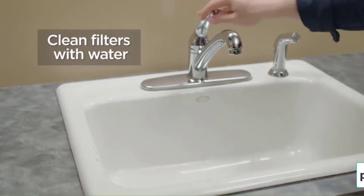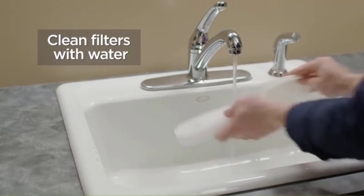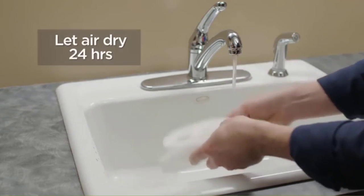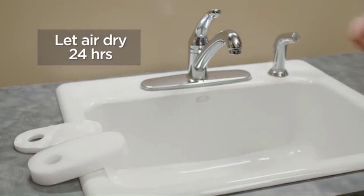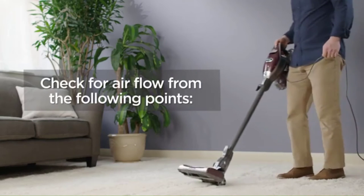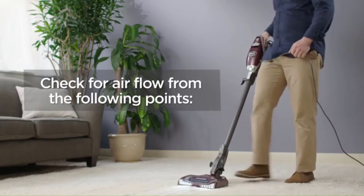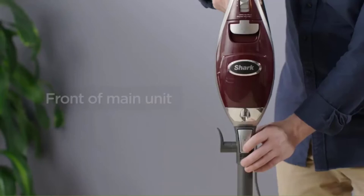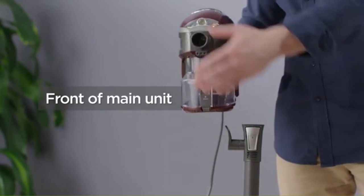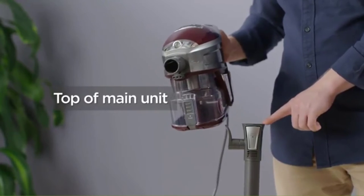Besides, the low design allows you to pick up quickly debris under furniture. Moreover, the dust cup's capacity is 0.69 quarts, so that you can spend more time cleaning and save time emptying the dust cup frequently. The filter of this device is washable and can be reused many times.